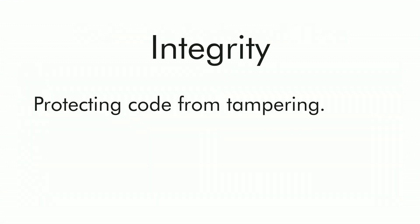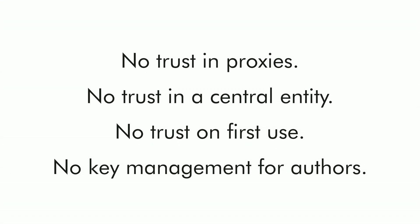However, this brings us to the next issue: integrity. If there are proxies in the middle, how do we guarantee the content hasn't been tampered with? This is usually solved with lock files containing hashes of dependencies, but we wanted to go further. We wanted a solution that didn't require trusting proxies, didn't require trust in a central entity — whether a registry or proxy operator — and had no trust on first use. When you first generate the lock file, you get the hash from somewhere, and currently in most ecosystems you just trust whoever provides that hash. We also wanted to introduce no key management requirements for authors, because we know that never gets adopted.